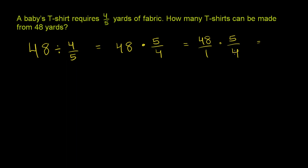We could divide the numerator and the denominator by 4. Or we could say, look, this is going to be equal to 48 times 5, whatever that is, over 4. Now, let's divide the numerator by 4.